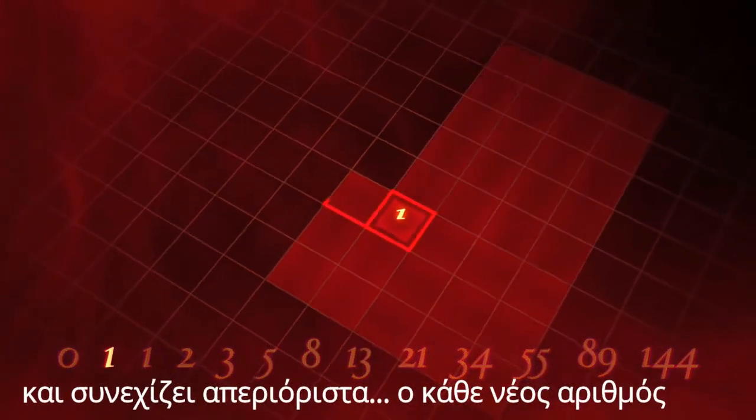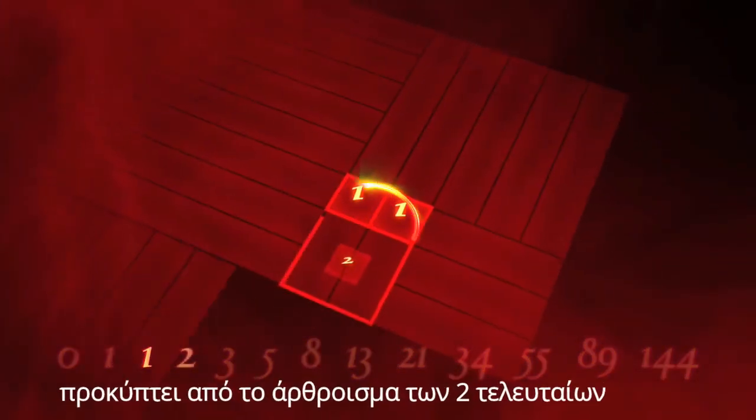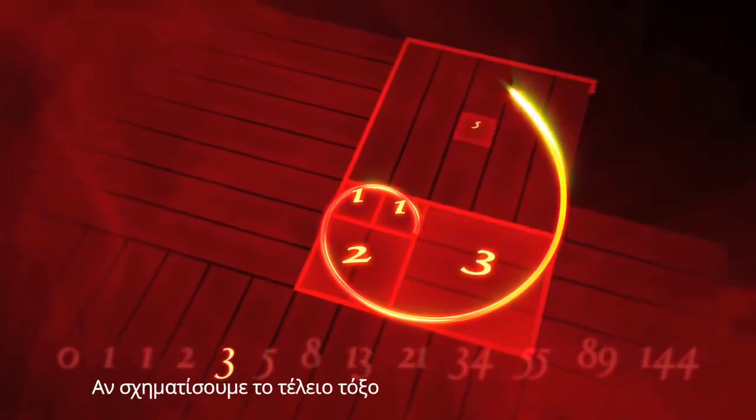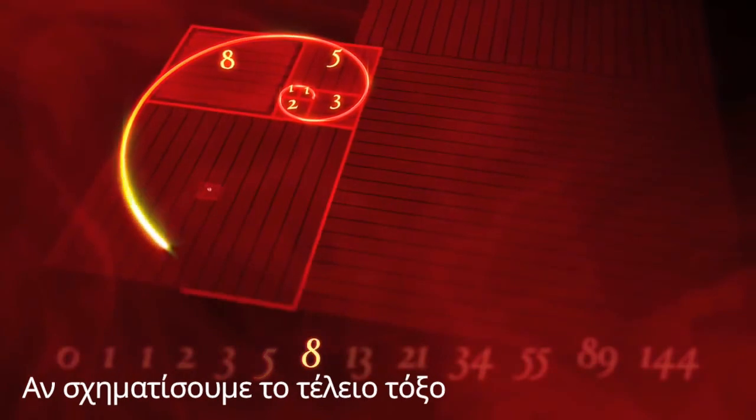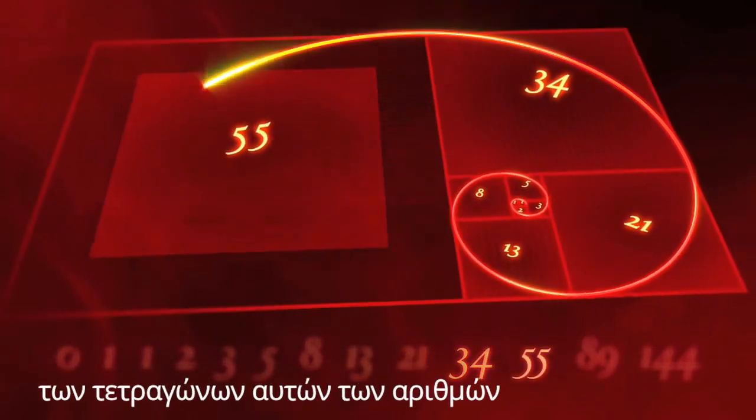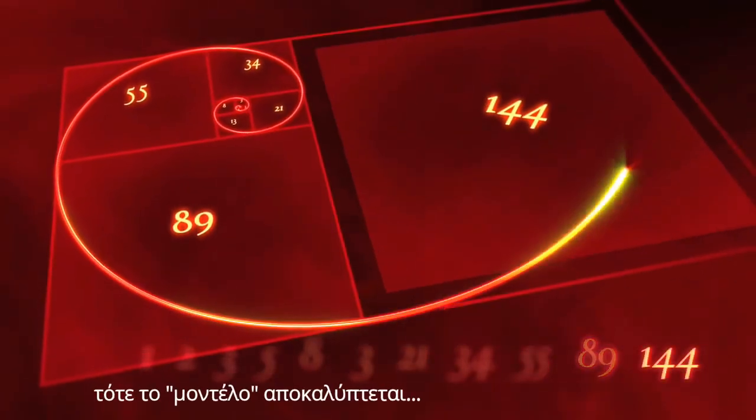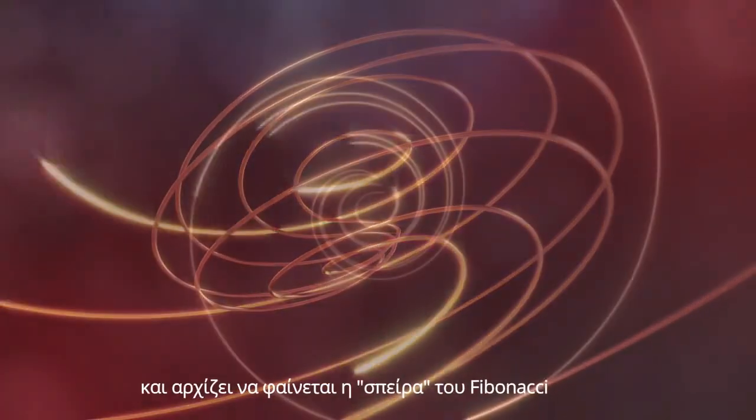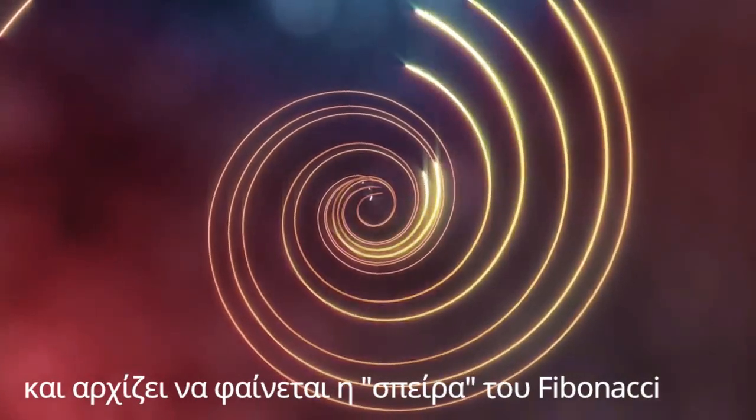Each number is obtained by adding the last two digits together. If we were to take a perfect or golden rectangle, break it down into smaller squares based on Fibonacci's sequence, and divide each with an arc, the patterns begin to take shape. We begin to see Fibonacci's spiral.